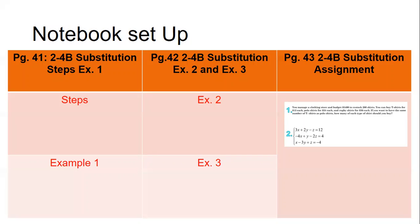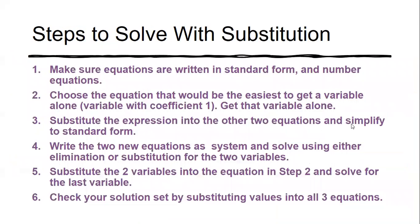On page 41 at the top you should have glued your steps for solving with substitution. Step one: make sure equations are written in standard form and are numbered. Step two: choose the equation that would be easiest to get a variable alone — usually one with a coefficient of one. You want to get one variable alone.